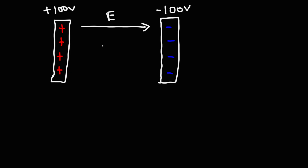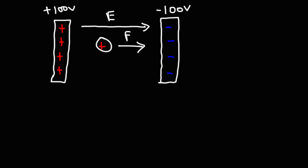Now, if we were to place a proton in this electric field, where will the proton go? The proton is going to feel a force that will accelerate it towards the negatively charged plate, because opposites attract. So it's going to accelerate towards the lower potential — it wants to move from a region of high potential to a region of low potential, much in the direction of conventional current.